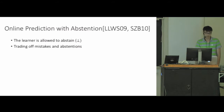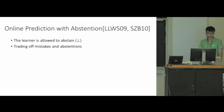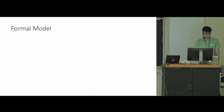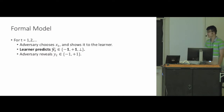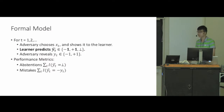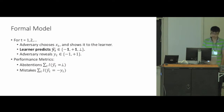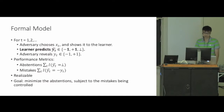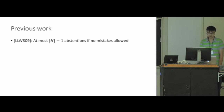In this talk we'll be focusing on online learning with abstention, initially studied in papers from 2009 and 2010. In this setting the learner is allowed to abstain, and we want to trade off between mistakes and abstentions. The only difference in the formal model is that the learner can also predict 'don't know'. Performance is measured by two things: the number of abstentions made over time and the number of mistakes. Our goal is to minimize the number of abstentions subject to a bound on the number of mistakes.